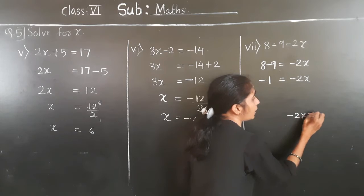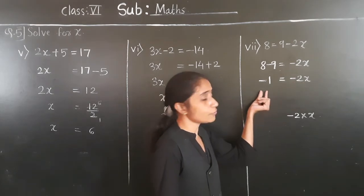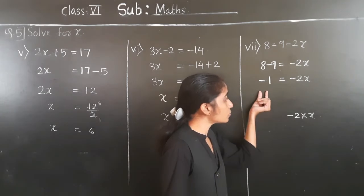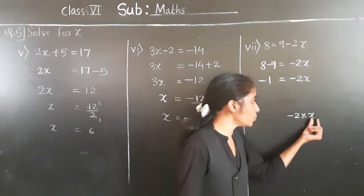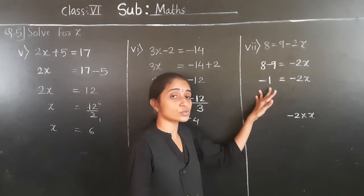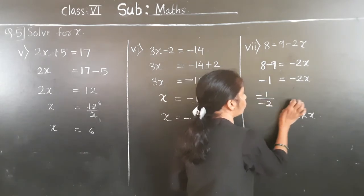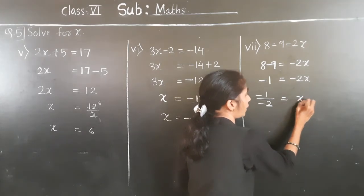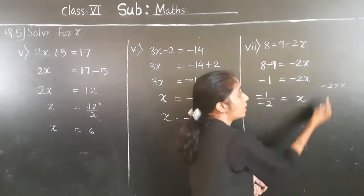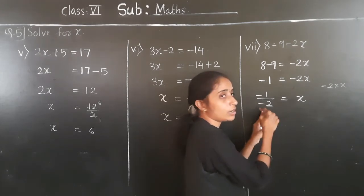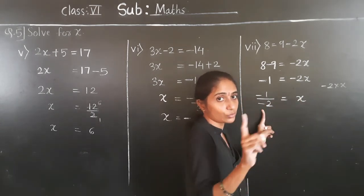Minus 2x means minus 2 multiplied by x. We are going to transfer minus 2 to the left hand side. The operation between minus 2 and x is multiplication — if we transfer it, it will become division. At that time we do not change its sign.